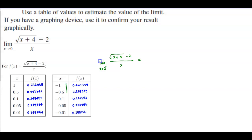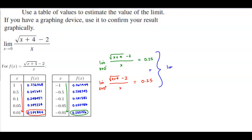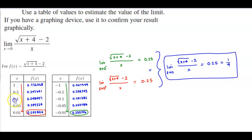As X is approaching 0 from the left, we can see that it is ending up at 0.25. And then as X is approaching 0 from the right, we can also see that this limit is approaching 0.25. Since these are equal, the limit as X is approaching 0 of the square root of X plus 4 minus 2 over X is equal to 0.25, or as the fraction, 1/4.